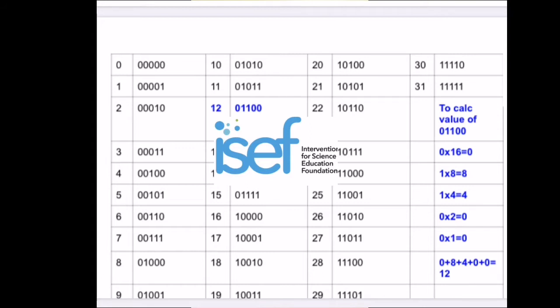To work out the value of one of the 5-bit binary numbers shown above, you multiply the first bit by 16, the second bit by 8, the third bit by 4, the fourth bit by 2, and the fifth bit by 1.